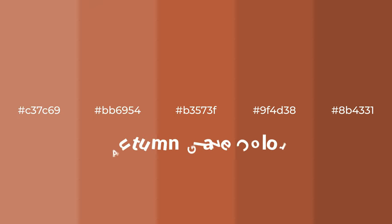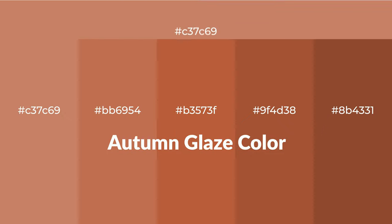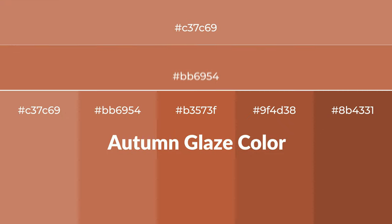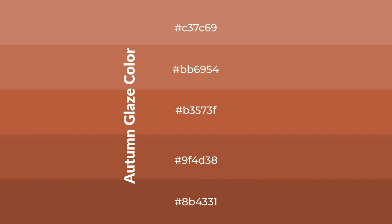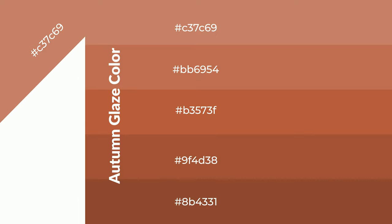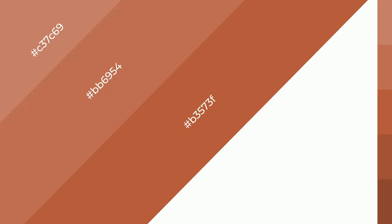Warm shades of autumn glaze color with orange hue for your next project. To generate tints of a color, we add white to the color. Tints create light and exquisite emotions. To generate shades of a color, we add black to the color. Shades are used in patterns, 3D effects, and layers, creating depth and drama.